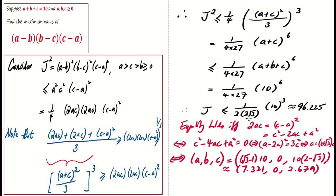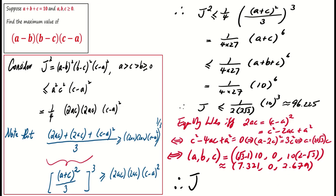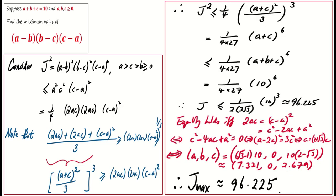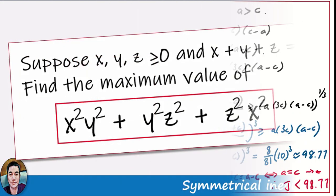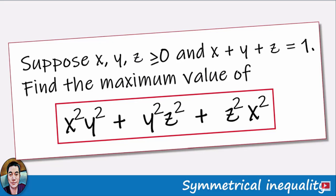Thus, the maximum value of J is approximately 96.225. Reflecting on our initial estimate of 96, it is a good attempt but we can improve it further. As we successfully navigated through this problem,